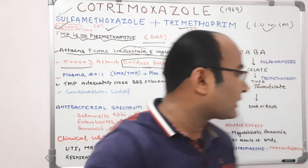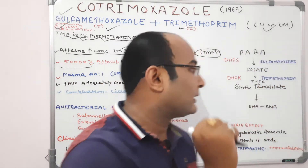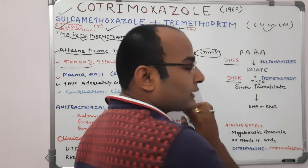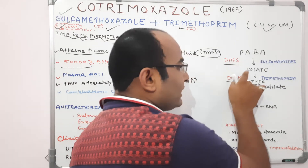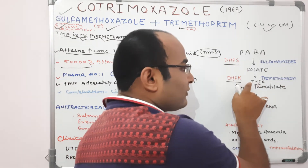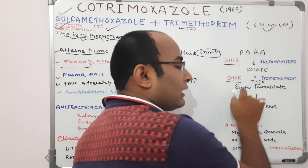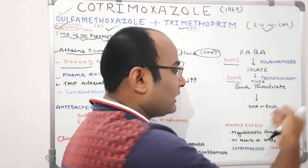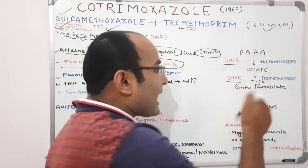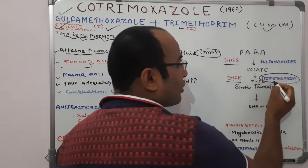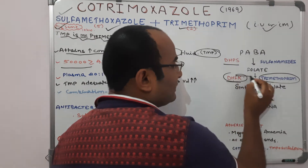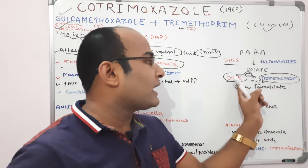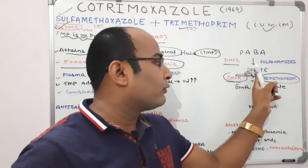Trimethoprim acts on the second step of this pathway. The first step is through dihydropteroate synthase; the second step is through dihydrofolate reductase. Trimethoprim completely binds with dihydrofolate reductase and inhibits the conversion of folate into tetrahydrofolic acid, thereby blocking the further synthesis of thymidylate and ultimately blocking the synthesis of DNA and RNA of the bacteria.